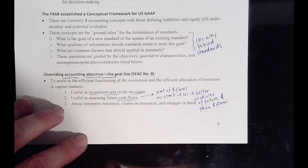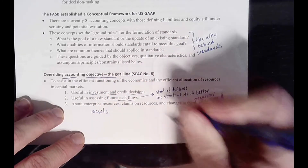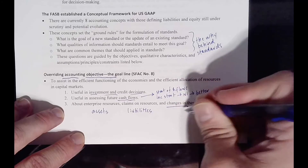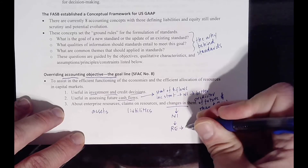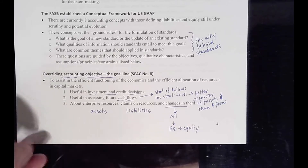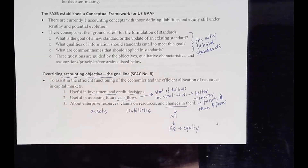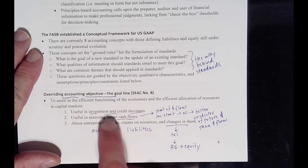We also get information about the enterprise's resources — these are assets; claims on resources — these are liabilities; and changes in those resources — these are going to be net income, which eventually filters into retained earnings, which is equity. You can already start to see this is the reason why we have the financial statements that we do. It's not arbitrary — it appeals back to what we are trying to accomplish with financial reporting. Understand the overall objective as well as the three sub-objectives that obtain this overall objective.